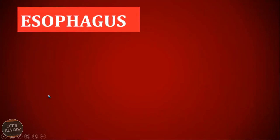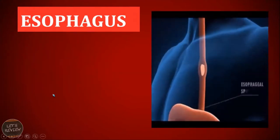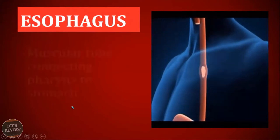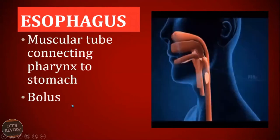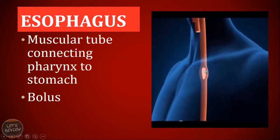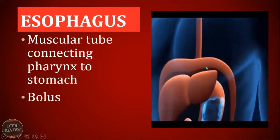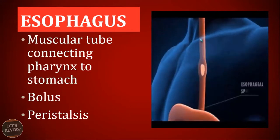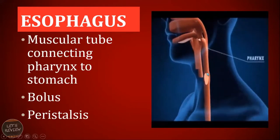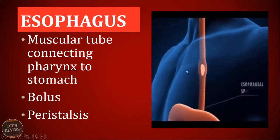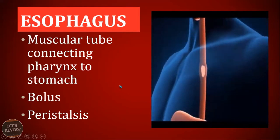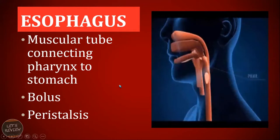The next part connected to your pharynx is called the esophagus. It is the long tube that connects the pharynx down to your stomach. Remember that the food you swallow turns into a bolus — it should be in a bolus shape. To move the food down to your stomach, there is a movement known as peristalsis, which pushes the food downward. So even if you eat upside down, the food will still be pushed down towards your stomach.